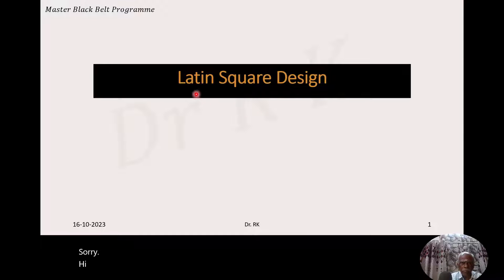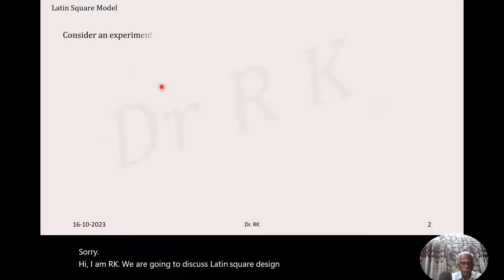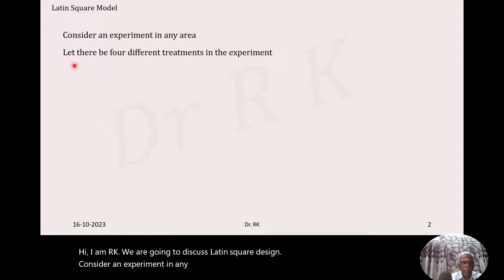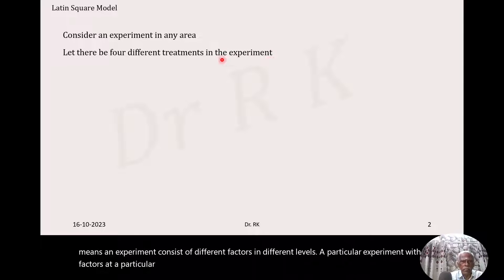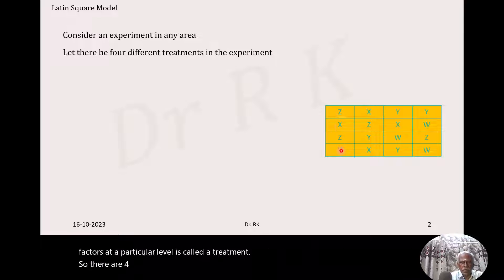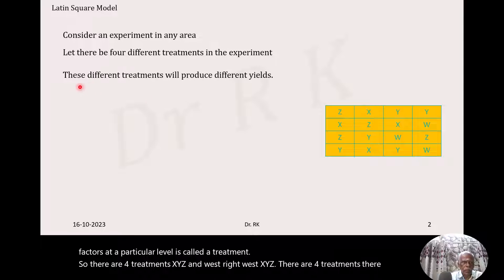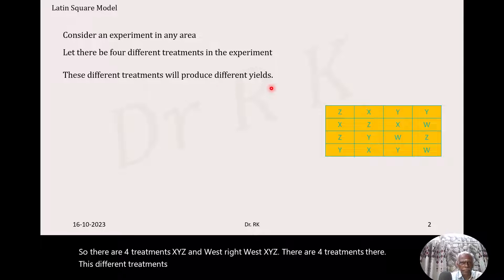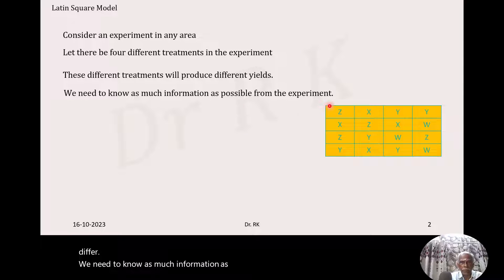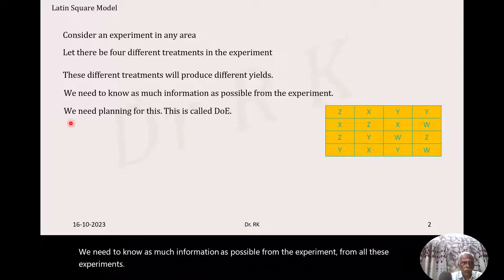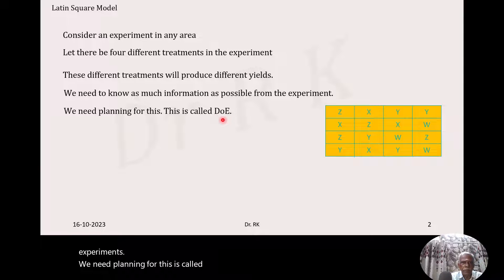Hi, I am RK. We are going to discuss Latin square design. Consider an experiment in any area. Let there be four different treatments in the experiment. An experiment consists of different factors at different levels. A particular experiment with factors at a particular level is called a treatment. So there are four treatments: W, X, Y, Z. We need to know as much information as possible from the experiment. We need planning for this. This is called DOE, design of experiments.